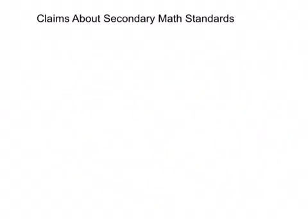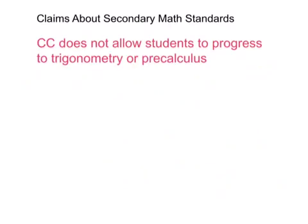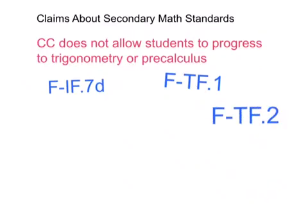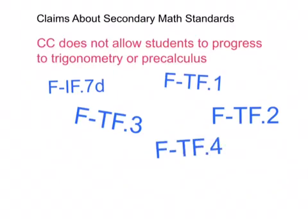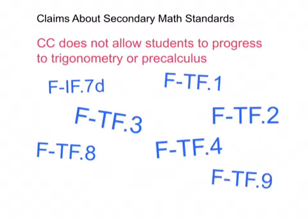Dr. Stotsky also cited Milgram in saying that Common Core does not allow students to get trigonometry and pre-calculus in high school and so they won't be ready for college. You can definitely get trigonometry and pre-calculus through the Common Core math standards. You've got graphing rational functions identifying zeros and asymptotes, the unit circle, radian measure, extensions of the trig functions to all the real numbers, special triangles in the unit circle, symmetry and periodicity of the functions, trigonometric identities, and even the addition and subtraction trig identities.